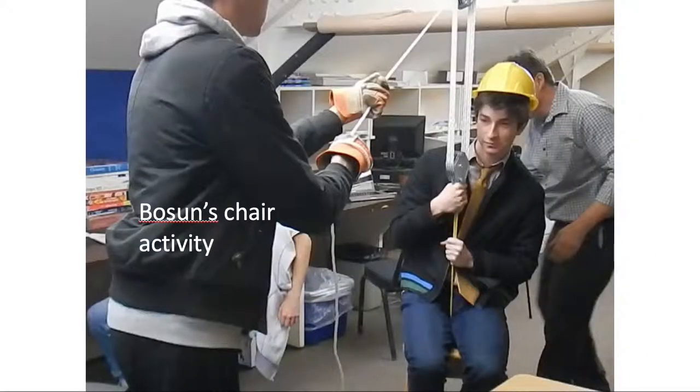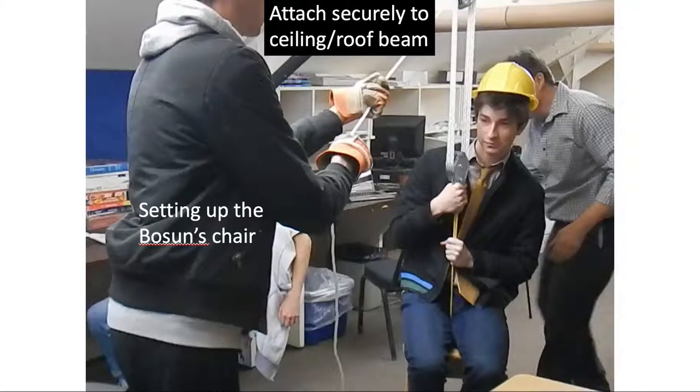One application is the bosun's chair, being able to lift someone using a pulley system. So when you're setting up the chair, attach it very firmly to the topmost point. So here it's a roof beam. Have enough space because the effort rope will move much further.